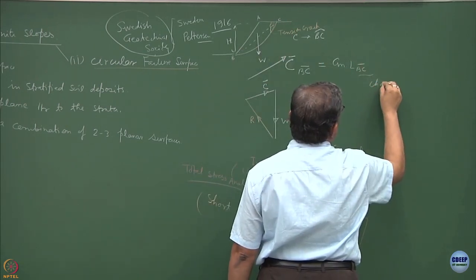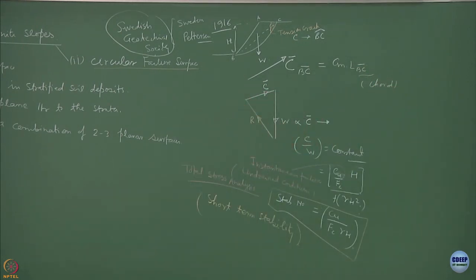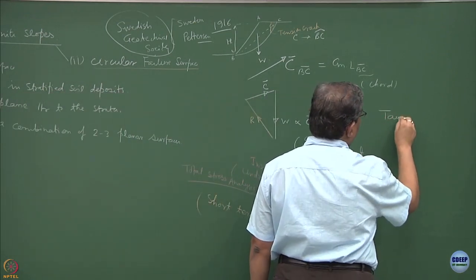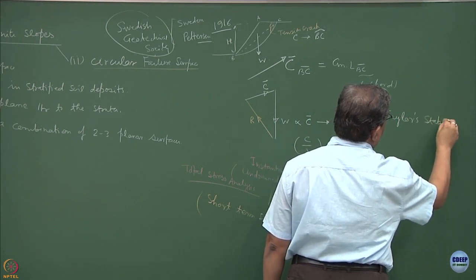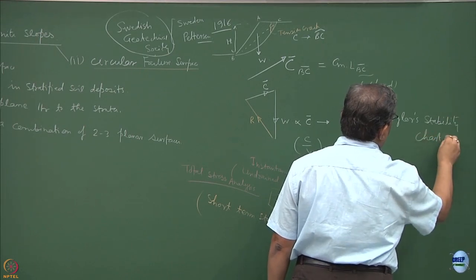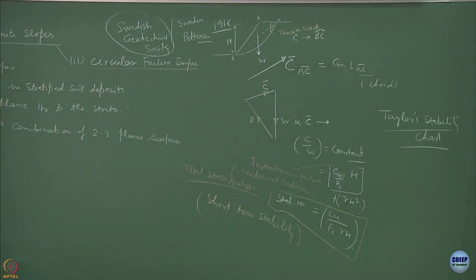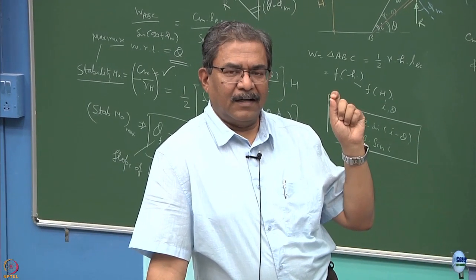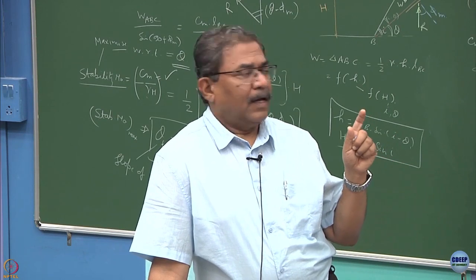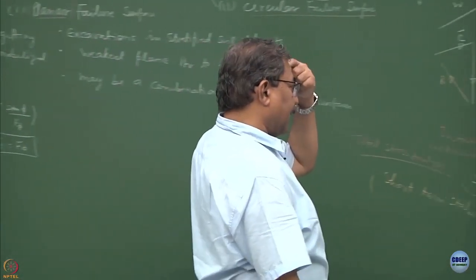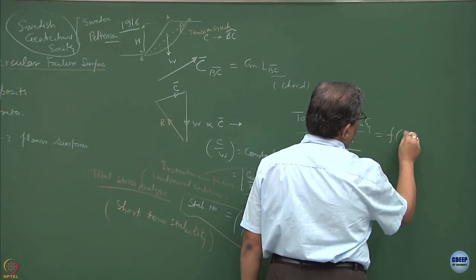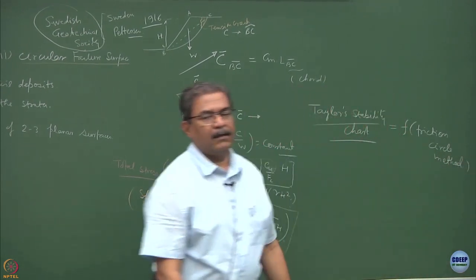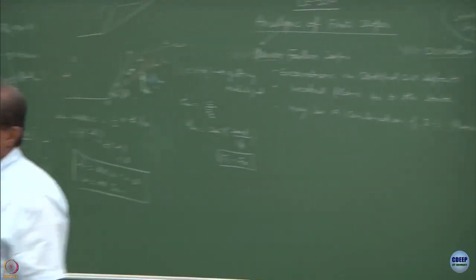This function will be equal to Cm into length of the chord along which it is acting, length of BC as a chord. This hypothesis is attributed to Taylor, the person who has proposed this, and we call them Taylor's stability chart. They will be applicable for total stress condition and truly speaking these charts have been derived based on the friction circle method.